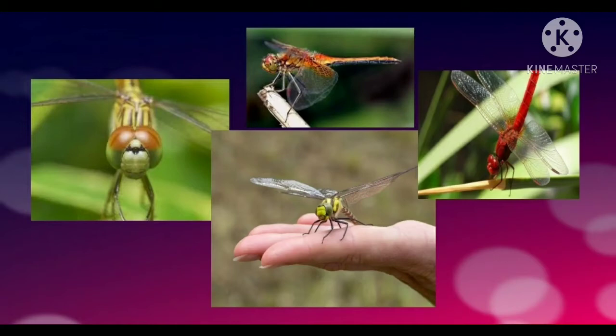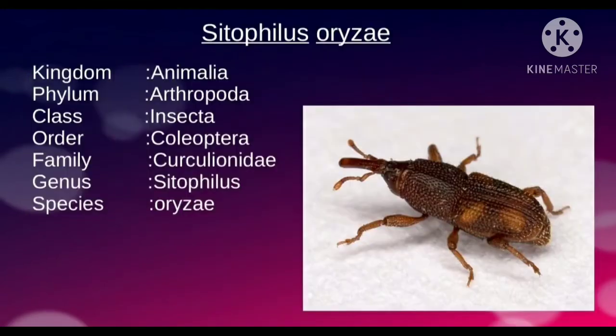Insects form the largest group within the arthropod phylum. We can see insects on plants, stored grains, beds, old books, etc. Now we discuss about the pest of stored grains: Sitophilus oryzae. It is included in kingdom Animalia, phylum Arthropoda, class Insecta, order Coleoptera, family Curculionidae.